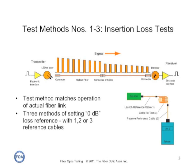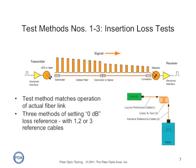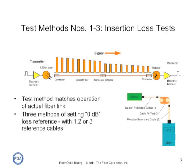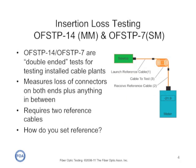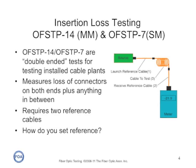A source puts light into one end of the cable plant, and as the signal goes down the fiber, it's attenuated by the attenuation coefficient of the fiber. It will lose power at a connection or a splice, then continue losing light due to the attenuation of the fiber until it reaches the receiver. All insertion loss tests work basically the same way, but the difference is how you set the reference for zero dB. There are different standards for single mode and multi-mode fiber, but the methodology is basically the same.